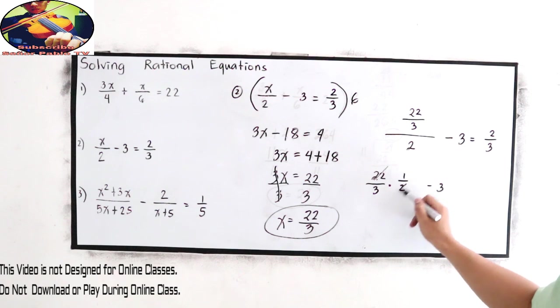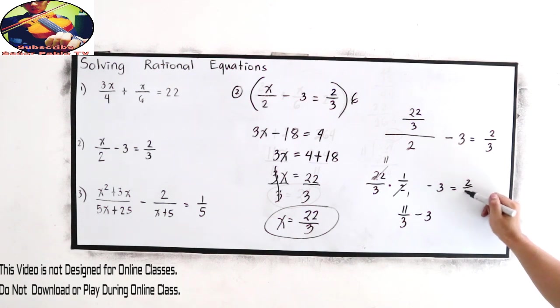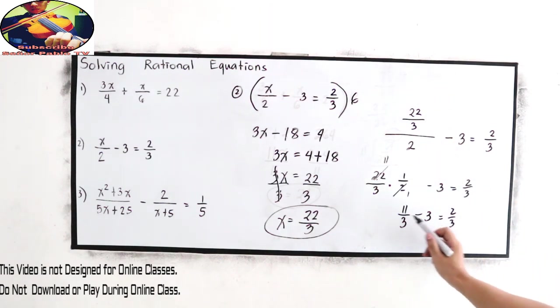22 over 3 times the reciprocal 1 half minus 3. Use cancellation method. So 22 and 2 that will become 11 and this is 1. So we have 11 over 3 minus 3 is equal to 2 over 3.